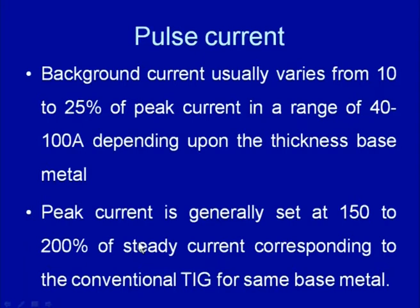The peak current is normally 1.5 to 2 times the current used in conventional arc welding for the same metal, so that high pulses of current can provide very quick melting with deeper penetration, followed by high solidification rate during the base current period. This kind of pulsing helps in refining the grain structure and improving the properties of the weld joint.